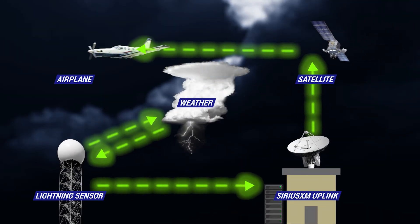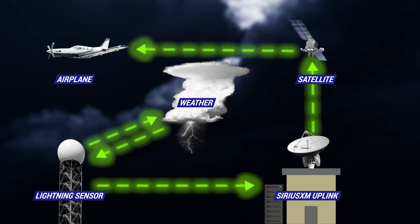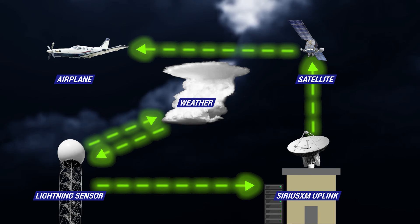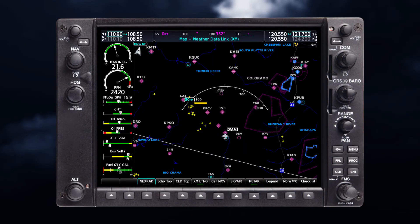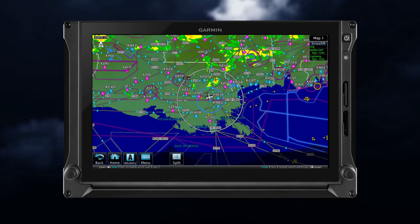Since this information must be collected, compiled, and transmitted to satellites, there is always a time delay. This must be taken into consideration when using data link lightning information. Data link lightning is a strategic weather avoidance tool, allowing for advanced planning to avoid storm cells. If you see lightning strikes, it's a good idea to turn on NEXRAD to determine the location and strength of the echoes.